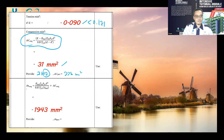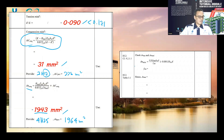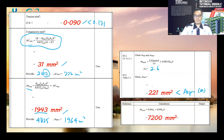We then provide 4H25 for tension reinforcement. Based on the steel reinforcement table, AS provided is equal to 1964 millimeter square. Checking AS minimum and AS maximum: fctm is equal to 2.6, AS minimum is equal to 201 millimeter square, which is lesser than AS provided, so it is okay. AS maximum is equal to 7200 millimeter square, which is greater than AS provided.